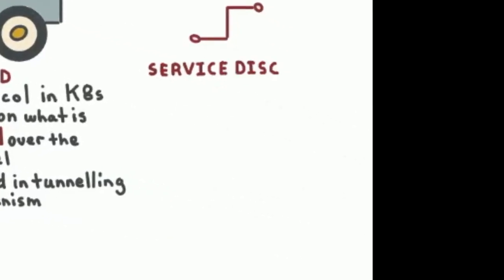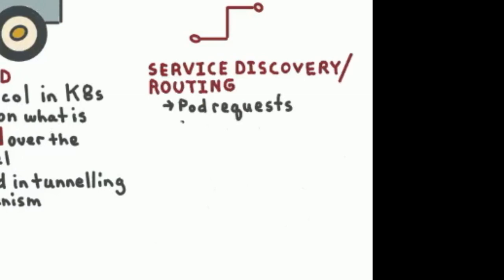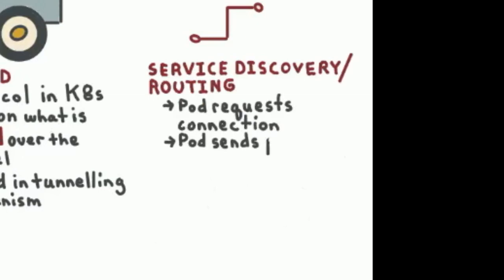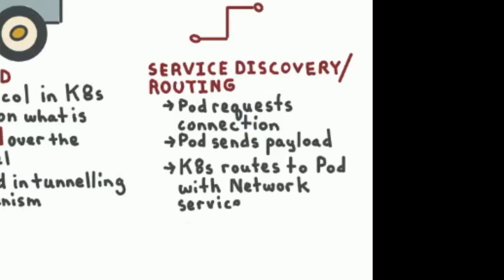So, network service discovery and routing: a pod requests a connection to a network service and sends a payload — either IP, Ethernet, MPLS, or whatever — over that connection. That connection should be routed by Kubernetes to whoever is providing the network service, possibly using load balancing under the covers.